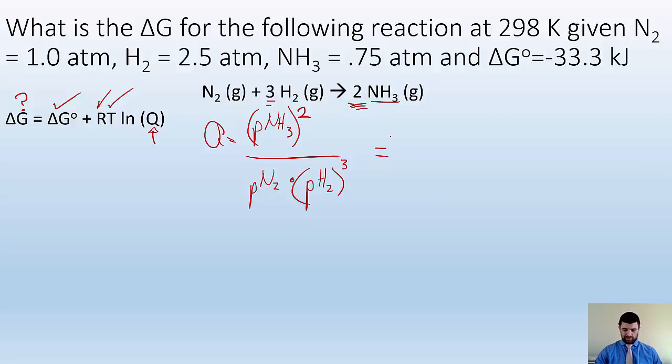So why don't I go ahead and plug in those numbers for Q, and I'll tell you what I get. I have it written down somewhere because I'm going to goof it up, and I don't want to goof it up, 0.75 squared all over 1.0 times 2.5 cubed, and when I plug and chug that, I get a number at 0.036 as my Q.